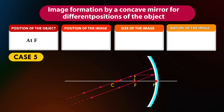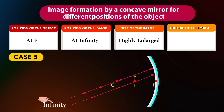Case 5: If the position of the object is at F, the position of the image will be at infinity. The size of the image will be highly enlarged, and the nature of the image is real and inverted.